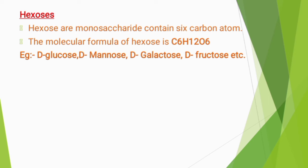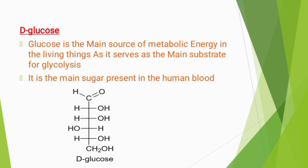D-glucose is the main source of metabolic energy in living things, as it serves as the main substrate for glycolysis. It is the main sugar present in human blood. Here we can see the structure of the glucose molecule with the formula C₆H₁₂O₆.